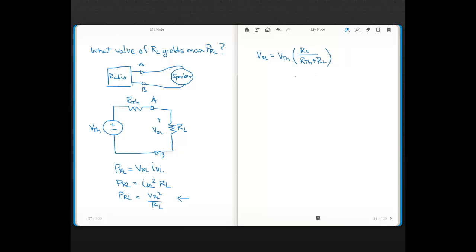Okay. And then we're going to take the RL here and just plug it in right there. And when we do that, we'll get the following. That PRL is just going to be V Thevenin squared.